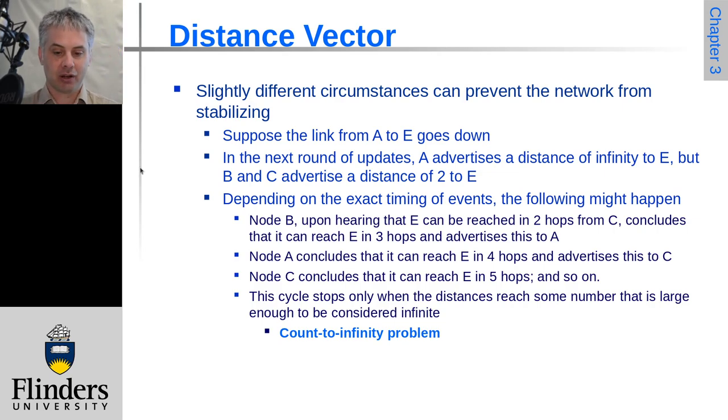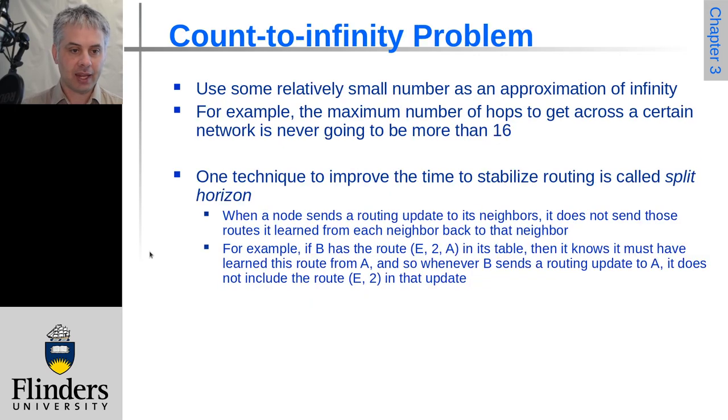So C hears that and C concludes that it can reach in five hops. And so this keeps on going. The estimated path distance keeps counting up to infinity. And so this is the count to infinity problem, and we will look at that in the next video.